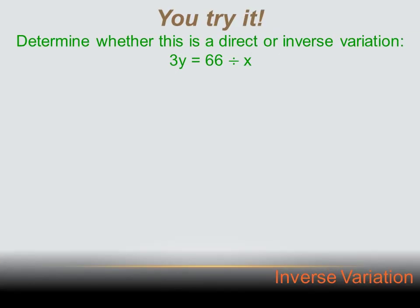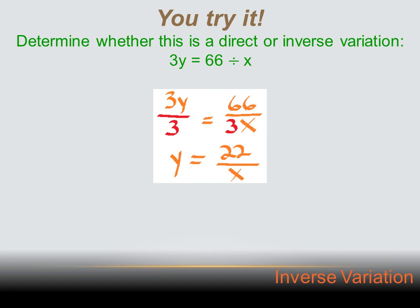Determine whether this is a direct or inverse variation: 3y equals 66 divided by x. We need to simplify it. First, divide both sides by 3. The left side becomes just y, and the right side becomes 22 over x. So y equals 22 over x — and that's the format for an inverse variation.